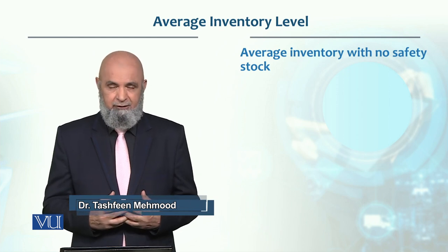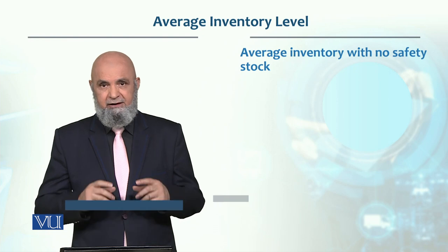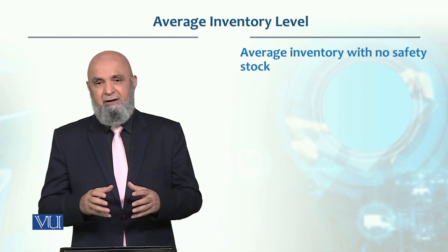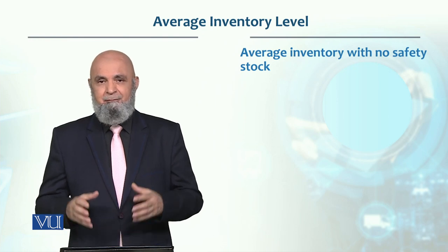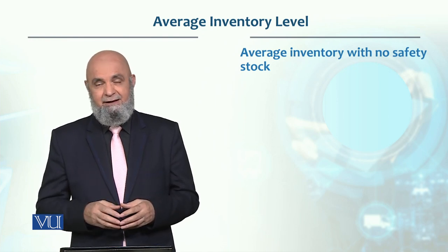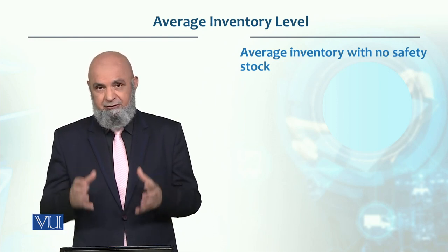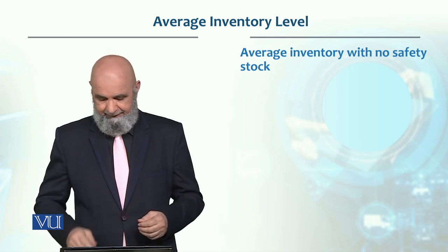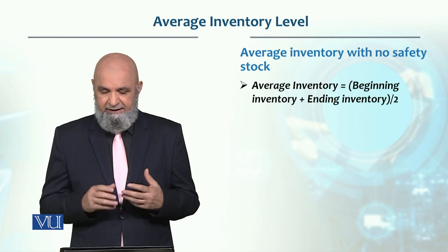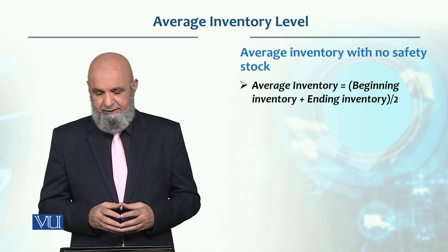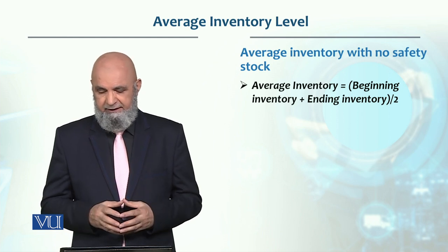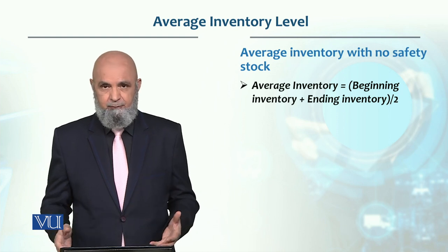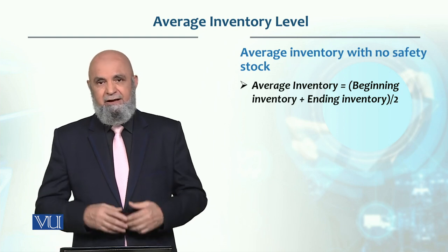We have the average inventory level. This is very important, because when we find the total cost, then the inventory holding cost and the inventory of safety stock, if you maintain the safety stock inventory. If we look at the average inventory, that is the beginning inventory plus ending inventory divided by 2.